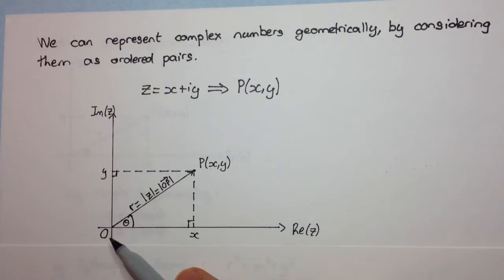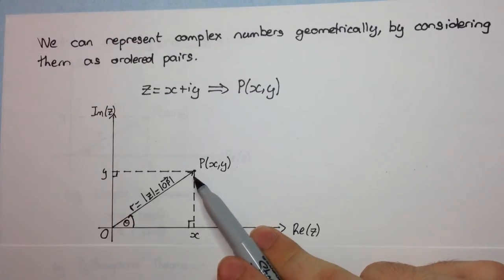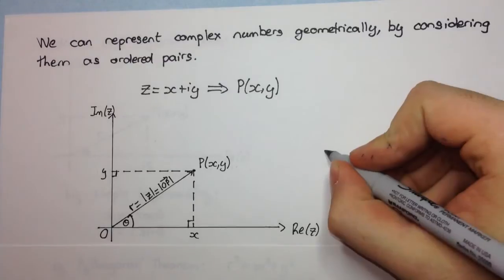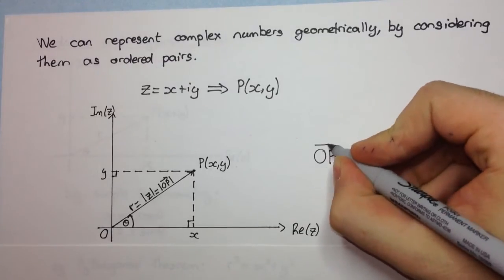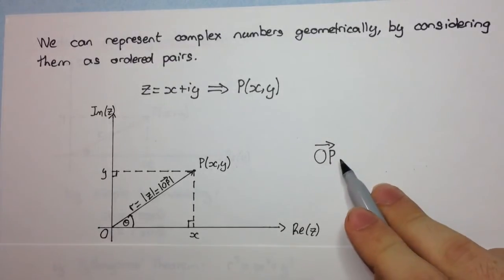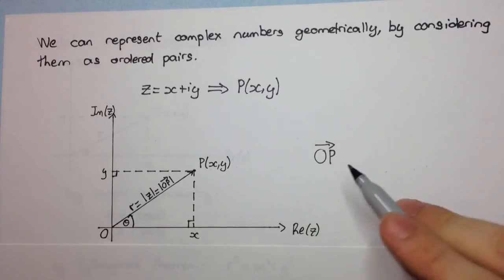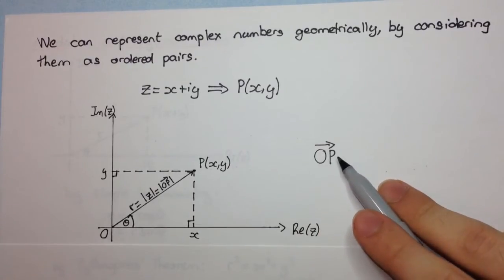Now, we can think of this as a vector from the origin to the point p. So this vector, I might write here, is written like this, OP, with an arrow above it to represent it as a vector. So this is the vector from o to p.